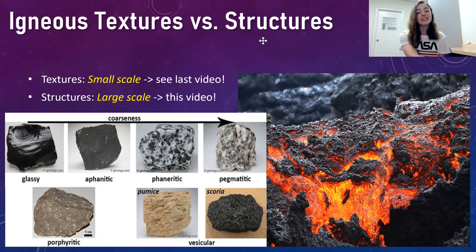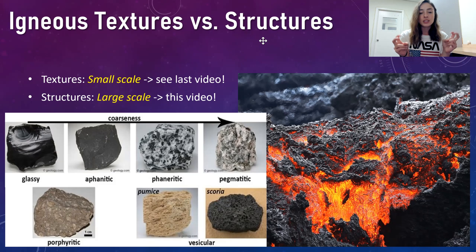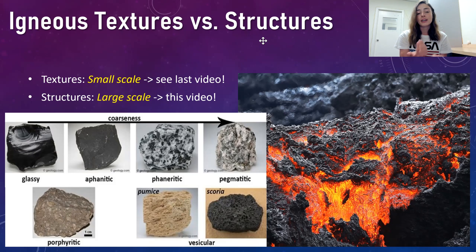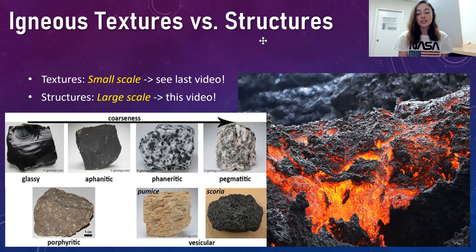First, I want to mention the difference between igneous textures and igneous structures. We talked all about igneous textures in the previous lecture — textures are small-scale features on igneous rocks. For example, glassy, aphanitic, phaneritic, pegmatitic, porphyritic, and vesicular rocks are all descriptions of rock texture. Structures, however, are larger-scale features, and that is what we'll be talking about in this video.